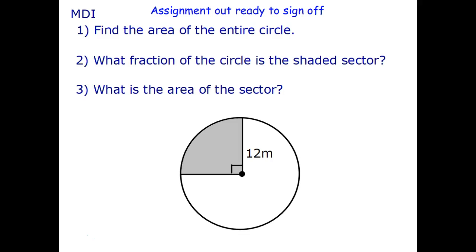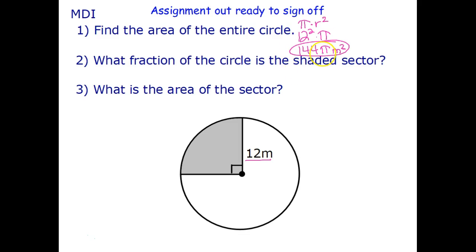The first thing we want to do is find the area of the whole circle. To do that we need pi times radius squared, and in this case our radius is 12 meters. So we're taking 12 squared times pi. 12 squared is 144, so we can leave this as 144π — that's one acceptable answer. The other thing we can do is replace pi with 3.14, and if we do that we get 452.16 meters squared.